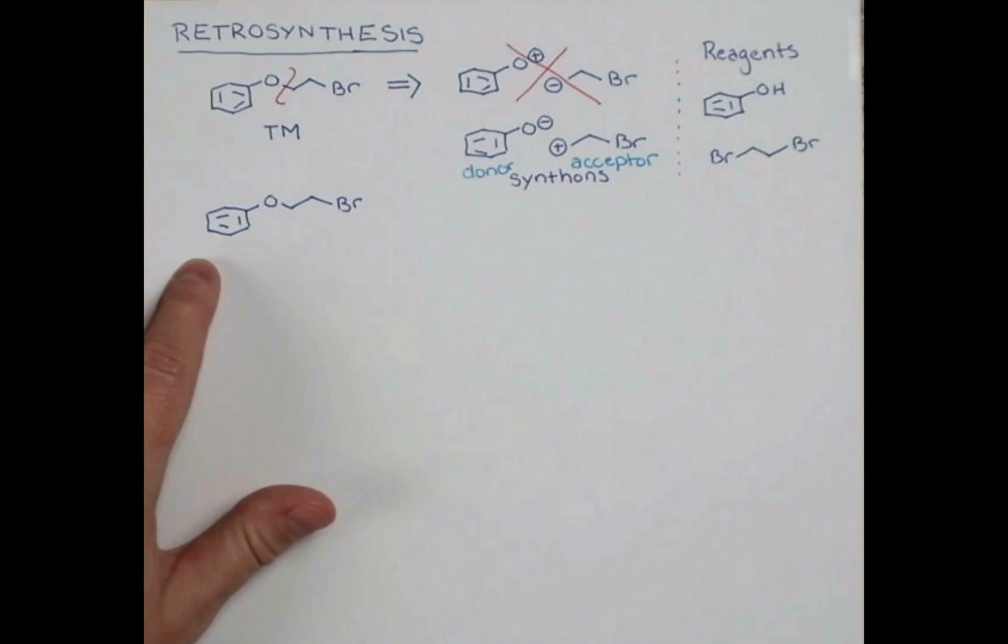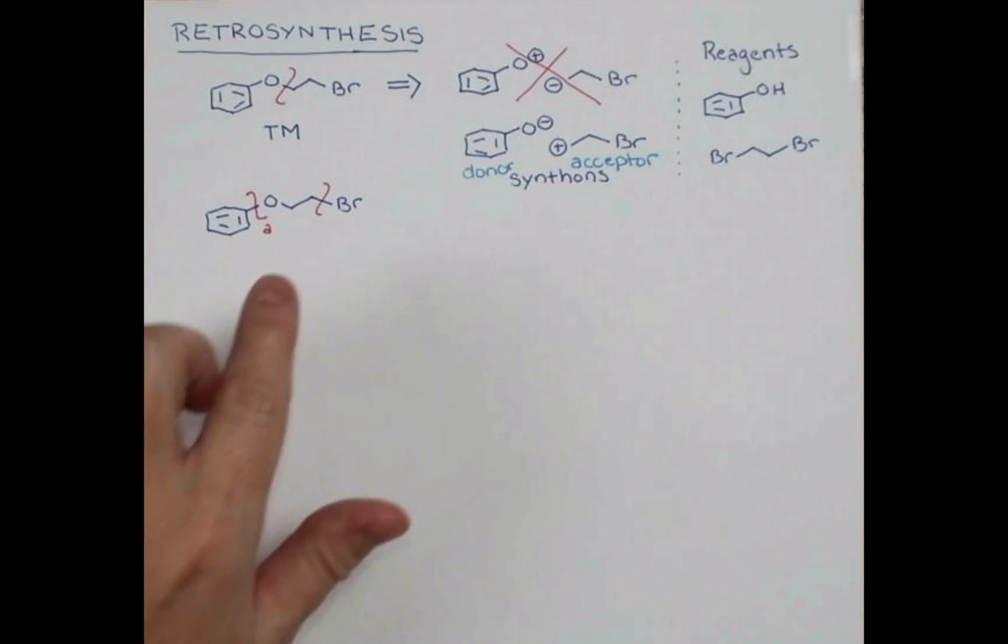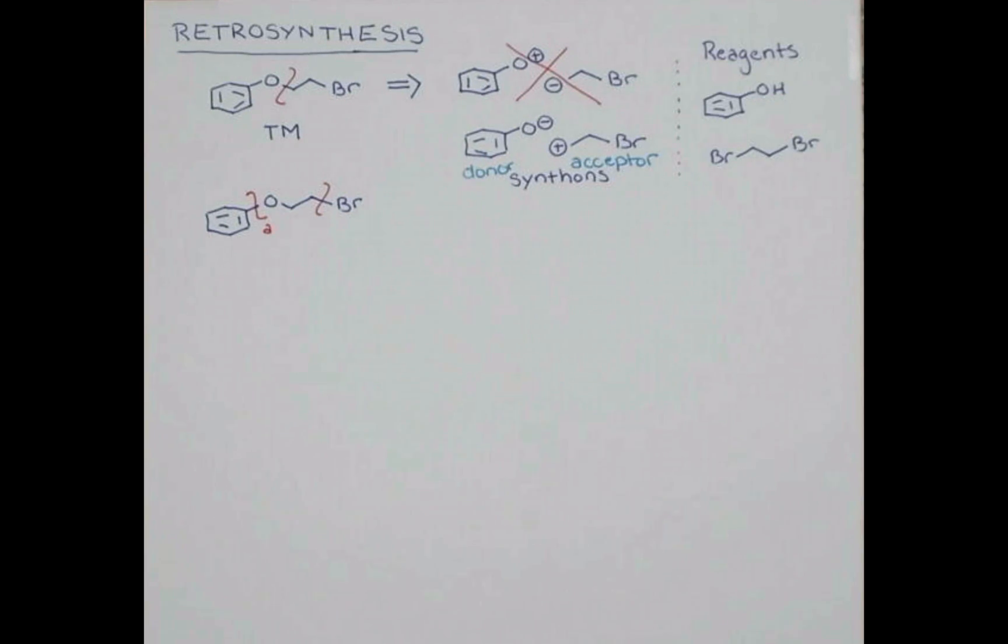Here's our target molecule redrawn. Now I'm going to draw some other disconnections. We'll cleave on the left side of the ether and call this A. And then we'll disconnect adjacent to the bromide and call that B. Neither of these is a very good disconnection. So why not?